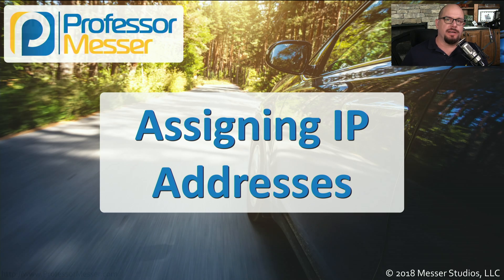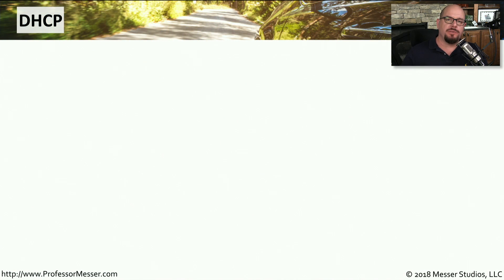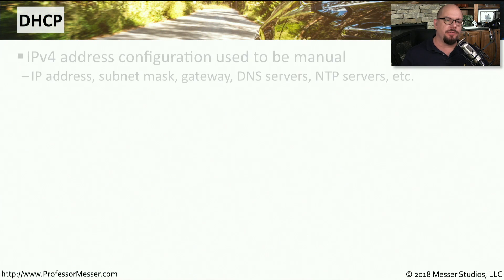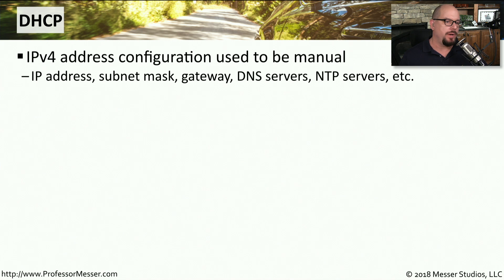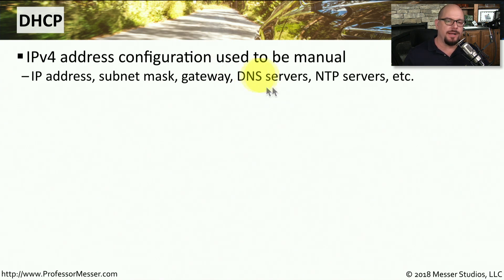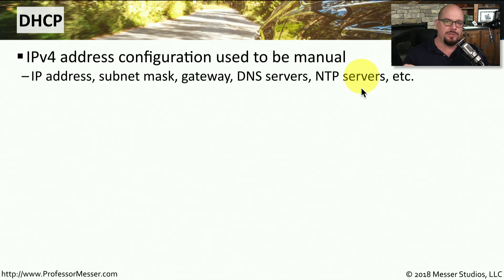In the early days of IP, you had to manually configure everything. You would add an IP address, a subnet mask, a gateway address, the DNS servers, NTP servers, and anything else that needed configuring for your TCP/IP to work properly.